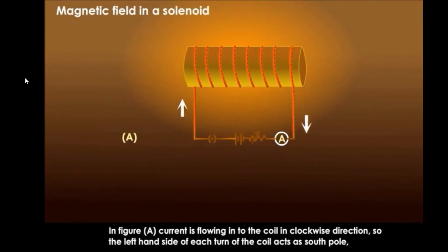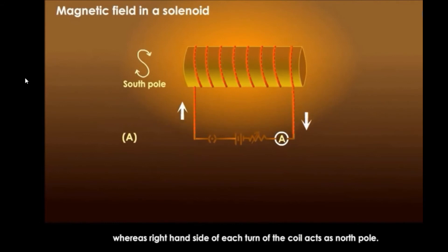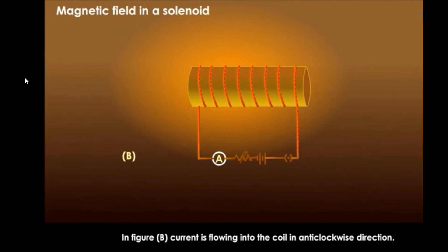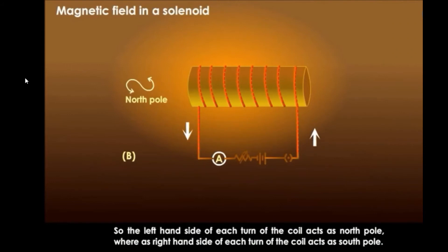In figure A, current is flowing into the coil in clockwise direction, so the left hand side of each turn of the coil acts like a south pole, whereas the right hand side of each turn of the coil acts as a north pole. In figure B, current is flowing into the coil in anti-clockwise direction, so the left hand side of each turn of the coil acts as a north pole, and the right hand side of each turn acts as a south pole.